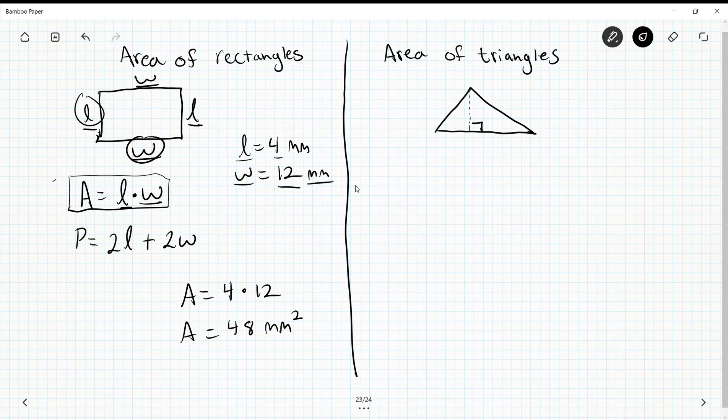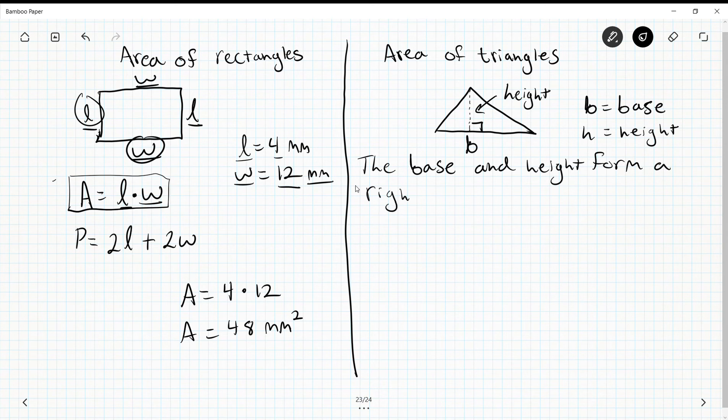Now for triangles, it's similar to rectangles but we have different dimensions that we are looking for. We are looking for the B which stands for base and the height, so H is height. You can find what the base and height are of a right triangle because those are the two sides that make the right angle. The base and height form a right angle, and we can only find area of right triangles.